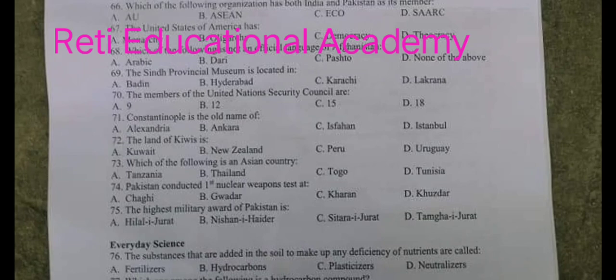Question number 72. The land of Kiwis is? A. Kuwait, B. New Zealand, C. Peru, D. Uruguay. The right option is B. New Zealand is the land of Kiwis.